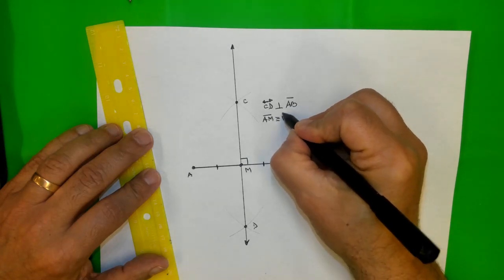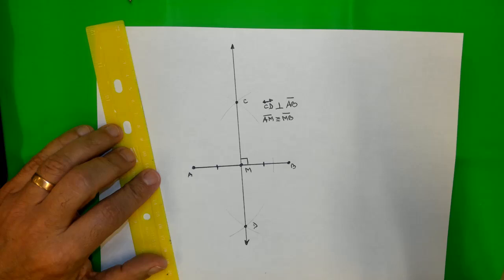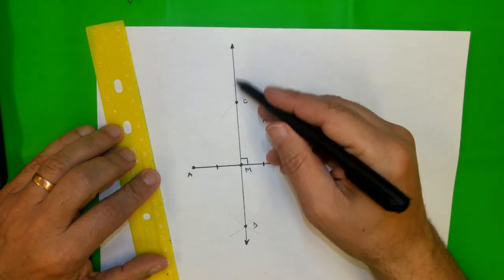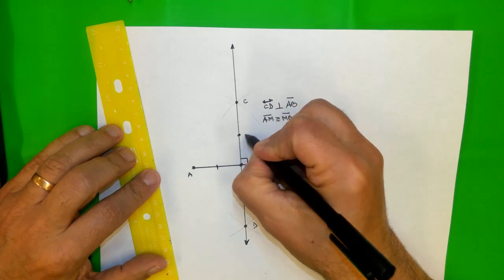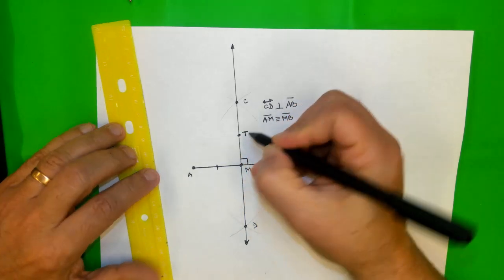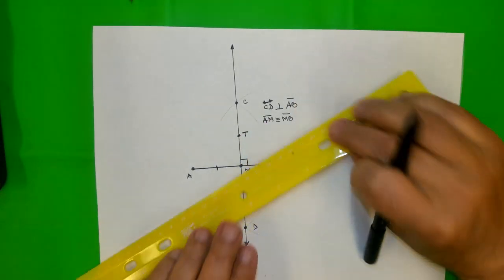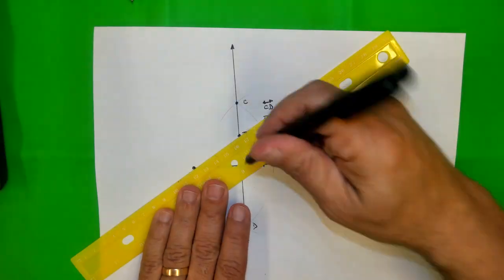There is also another important property of perpendicular bisector. You can pick any point on this perpendicular bisector, let's say like this point T. This point T is equidistant...